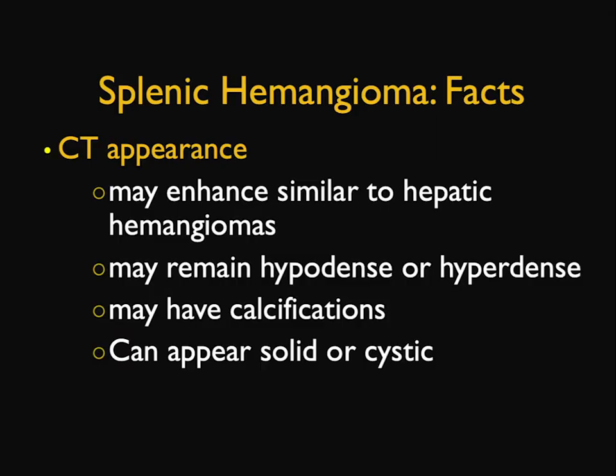In splenic hemangiomas, there are a number of different facts to remember. They may be similar to hepatic hemangiomas in terms of enhancement — peripheral puddling and central filling in — but that's rare, only about 20% of the time. Most of the time they simply remain hypodense. Occasionally they have calcifications. Most of the time they're cystic and purely cystic. At times they almost look like cysts, and there is an overlap between hemangiomas and hematomas, but there are some differences.